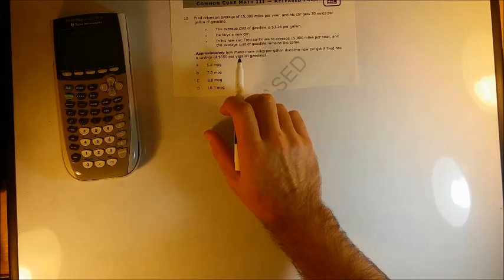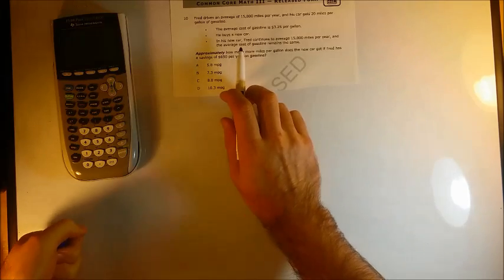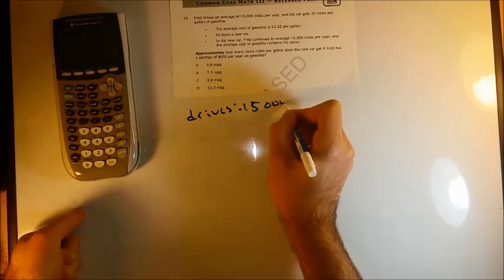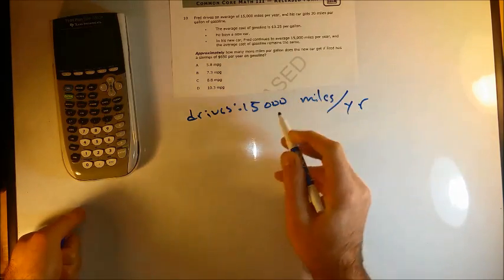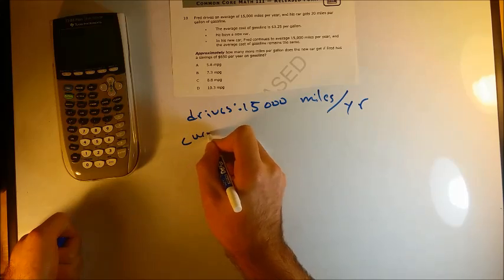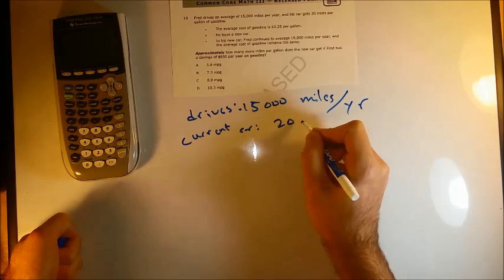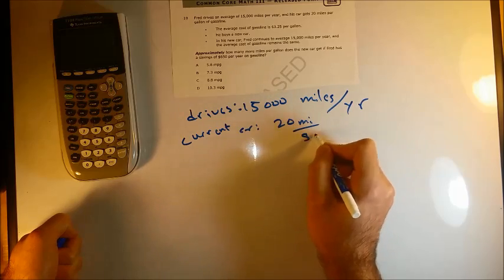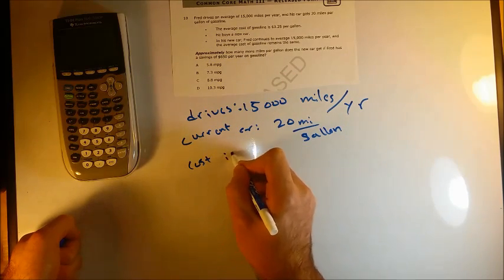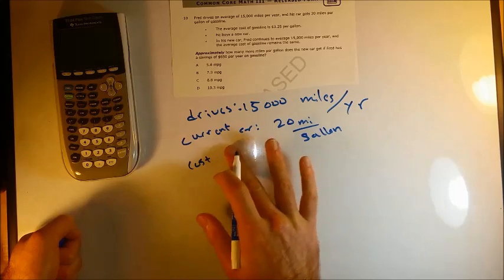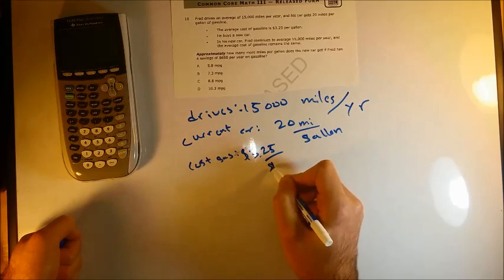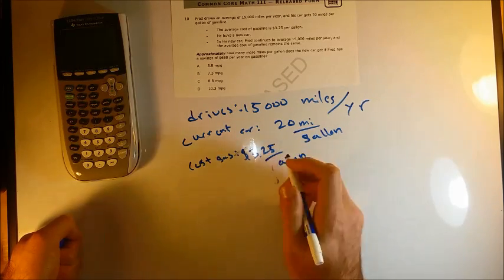Let's just take down the information we have and see what we can piece together from that. Fred drives 15,000 miles per year. His current car gets 20 miles per gallon. And the cost for gas is $3.25 per gallon. That price has gone down some recently, but for the sake of this problem it's $3.25.